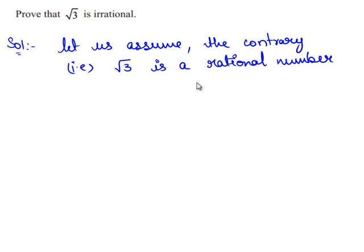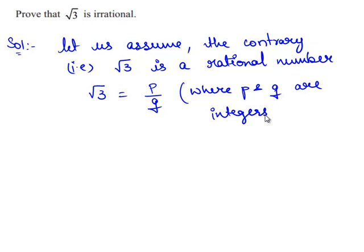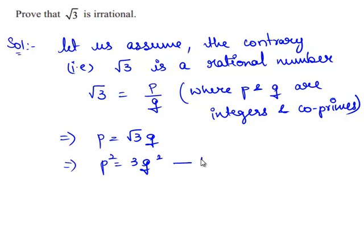Since we have assumed that root 3 is a rational number, root 3 can be written in the form of p upon q, where p and q are integers and also co-primes. So, this can be written as p is equal to root 3 times q. Now, we shall square this on both sides. This gives p square is equal to 3q square. Let this be equation 1.